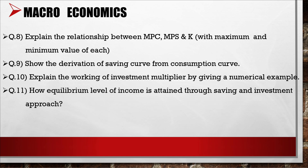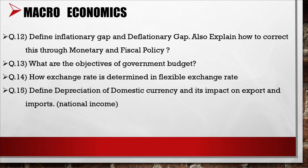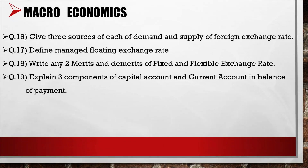11. How is the equilibrium level of income attained through the saving and investment approach? 12. Define inflationary gap and deflationary gap, and explain how to correct them through monetary and fiscal policy. 13. What are the objectives of government budget? 14. How is the exchange rate determined under a flexible exchange rate system? 15. Define depreciation of domestic currency and its impact on exports, imports, and national income. 16. Give three sources each of demand and supply of foreign exchange.